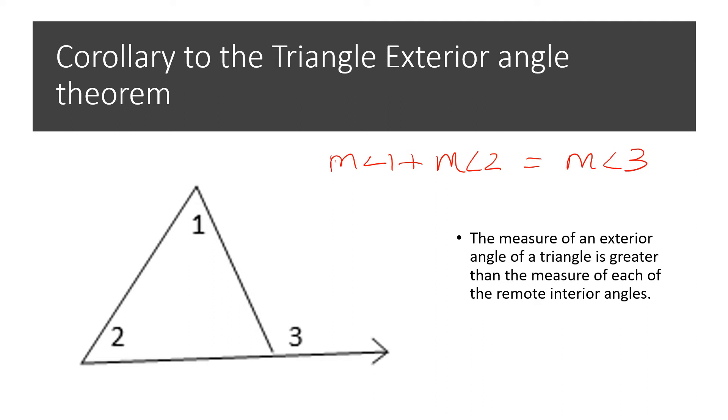So basically, they're just saying that the measure of angle three has to be greater than the measure of angle one. And the measure of angle three also has to be greater than the measure of angle two.